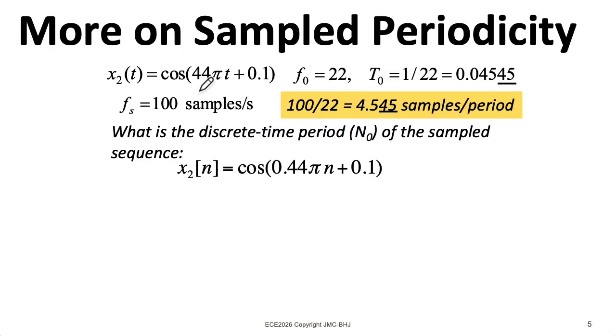What about that second example, this 22 hertz signal that we're sampling at 100 samples per second? The period of the signal is 0.0454545 forever and forever. This underscore here means that this 45 repeats.